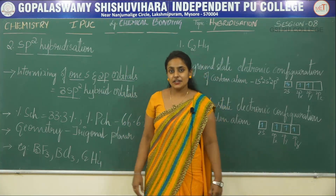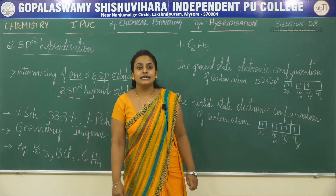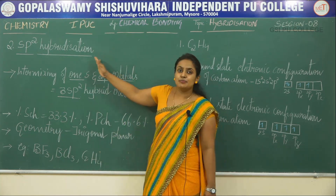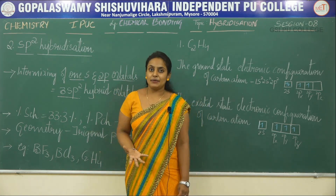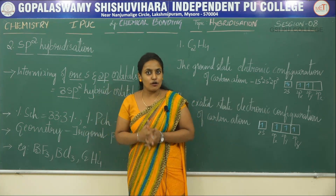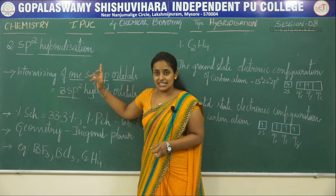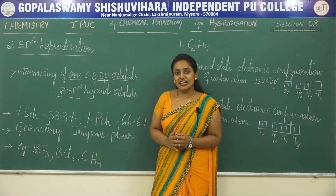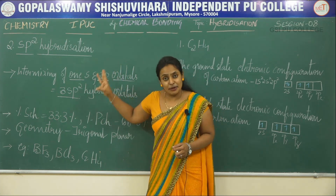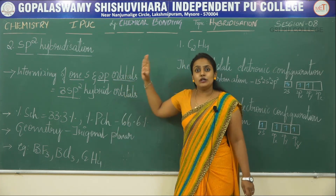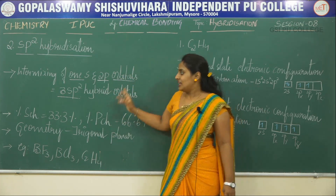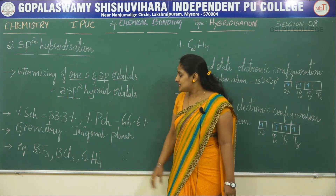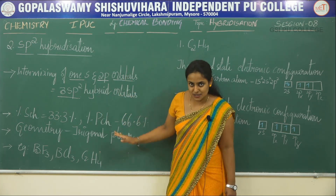Good morning students. In this session we are going to continue the types of hybridization. The second type of hybridization is sp2 hybridization. As we know, hybridization means intermixing of atomic orbitals. Here, one s orbital is intermixing with 2p atomic orbitals giving rise to 3 sp2 hybrid orbitals. The percentage of s character is 33.3% and the percentage of p character is 66.6%.